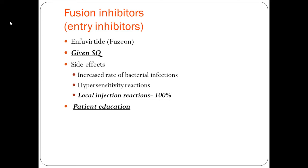Next we have the entry inhibitors, or fusion inhibitors. This drug is always given subcutaneously. One important thing to know is that 100% of patients will have a local injection site reaction — it is expected. We need to teach patients the difference between a reaction to the medication versus an infection or cellulitis. A typical reaction involves warmth and redness that may become excoriated or dry. Cellulitis will be warm, red, possibly purulent, and may spread outside the borders of the injection site. Additional side effects include an increased rate of bacterial infections and hypersensitivity reactions such as itching and pruritus.